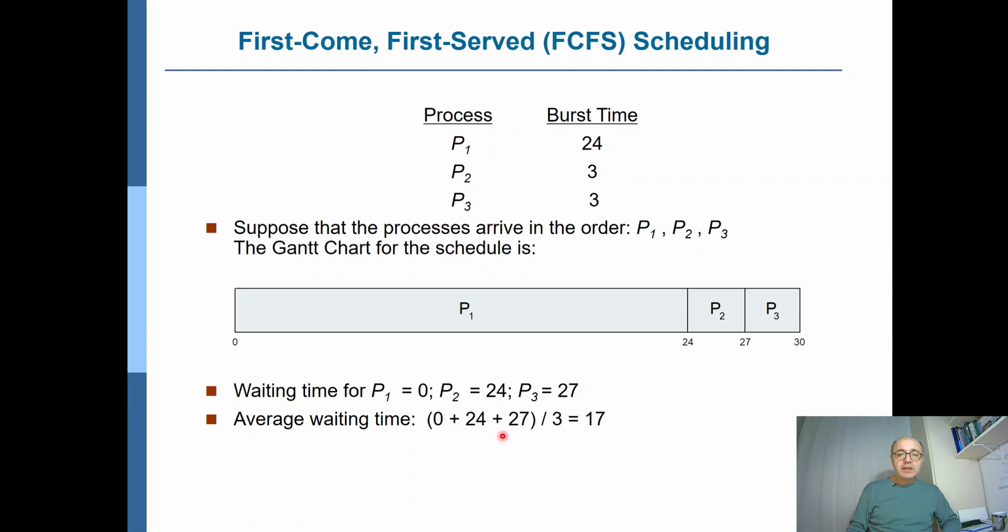If you calculate the average waiting time, that's 17. And the more important thing over here is you see the large variance also in the waiting times of the processes. Two of them have been waiting for a long time, while one of them waited almost, or in fact exactly, with no waiting time.